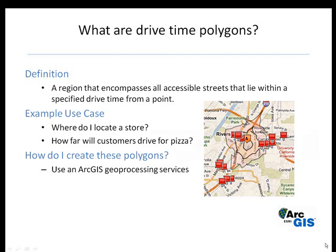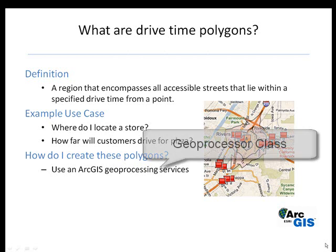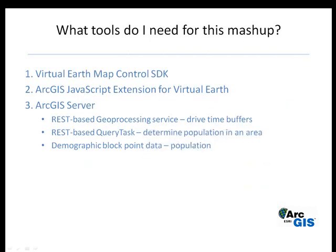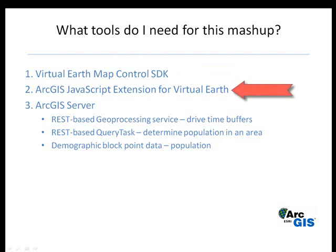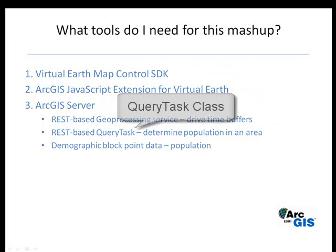How do I create these polygons? You want to use an ArcGIS geoprocessing service. What tools do I need for this mashup? You need the Virtual Earth Map Control SDK, the ArcGIS JavaScript extension for Virtual Earth, and of course ArcGIS Server, which provides the REST-based geoprocessing service — that's your drive time buffers. A REST-based query task is optional; you can use that to determine population within the drive time areas. You'll also need demographic block point data if you want to use the optional query task.